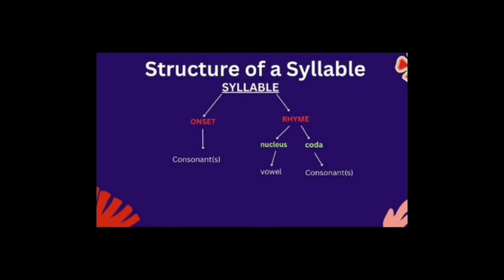The structure of a syllable: a syllable is divided into two parts — onset and rhyme. Onset has one or more consonants. Rhyme has two parts: nucleus and coda. The nucleus is the main element — if a vowel does not have a nucleus, it is not a syllable. The nucleus is the vowel, and the coda is one or more consonants.